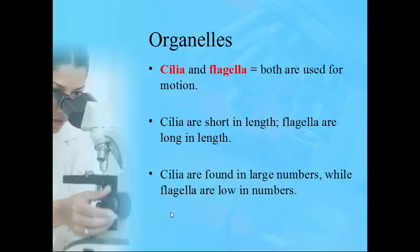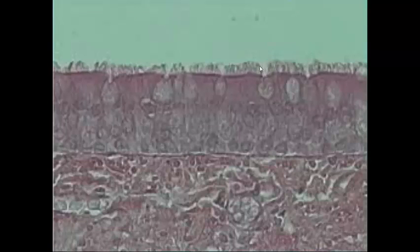Cilia and flagella are always mentioned together because they have a similar function — they're both used for motion — but they are very different. Cilia are very short in length; flagella are very long. Whenever you see cilia, you'll see them in very large numbers — thousands or tens of thousands. Flagella are always seen one at a time. This slide from the esophagus shows cilia that look like tiny hairs.